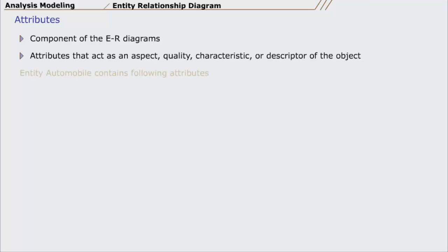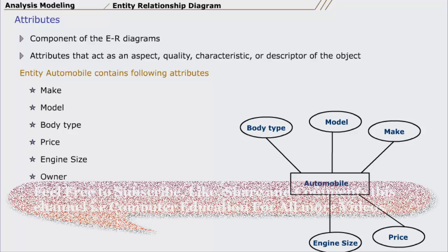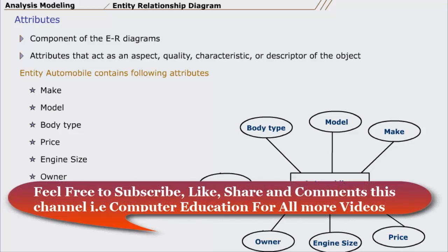For example, object Automobile contains these attributes, namely make, model, body type, price, engine size, owner, and ID number.